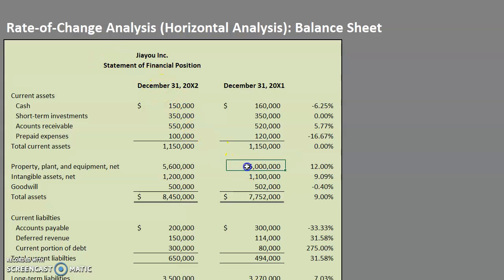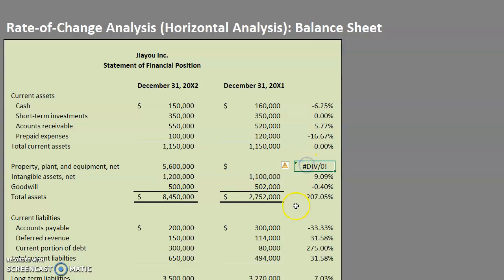For example, if we put a zero — let's say we ended December 31st with no PPE but then had 5.6 million — we get a little error message. So if we had a scenario like this we could go ahead and say 'see notes,' and our note would simply explain why we can't put that number in there. In this case it would explain that we didn't have any PPE at the start but purchased 5.6 million in PPE during the year.